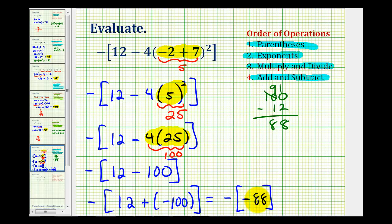And now we have the opposite of negative 88. Well the opposite of negative 88 is going to be positive 88.